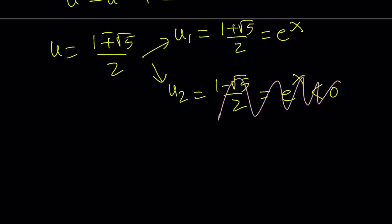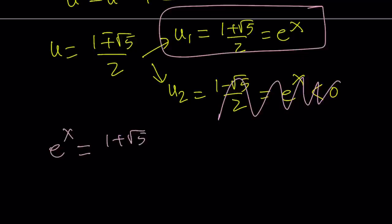So the only solution we end up with is going to come from here. I'm not saying that is the solution. It's just a u value. We have to find the x value. Let's go ahead and do that now. So the first one gives me e^x = (1 + √5)/2. Now, this is the golden ratio. That's why we call this a golden equation. Old but gold.